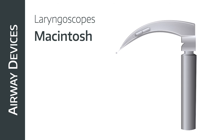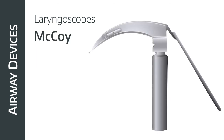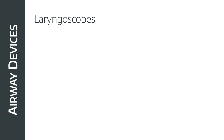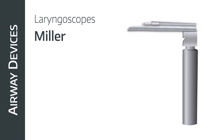The McCoy laryngoscope has largely been made obsolete by video laryngoscopy. It's a similar shape to the Macintosh but the blade comes in two parts connected by a hinge — a lever mechanism flexes the tip to move the epiglottis more anteriorly, useful for difficult intubations such as patients with an anterior larynx. There is a risk of tissue injury if tissue gets caught in the hinge. Finally, the Miller laryngoscope is generally the preferred blade for paediatric patients under two years of age. It is a straight blade, proportionally longer, and allows direct vision by lifting the epiglottis itself — useful because children have a proportionally much larger and more floppy epiglottis. Video laryngoscopic versions of the Miller blade are also available.